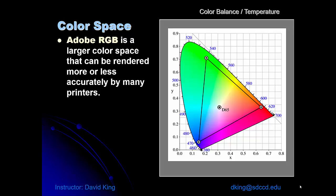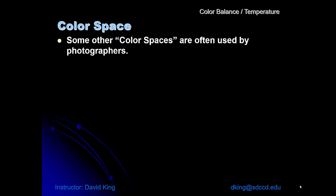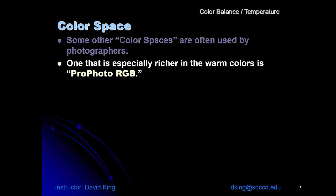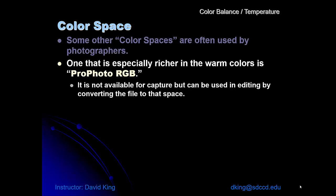There are other color spaces that are used by photographers. The one that is used most often because it's much richer in warm colors is ProPhoto RGB. Problem is, at the moment no camera can capture ProPhoto, but it is used a lot in editing. And we'll convert our files to that ProPhoto RGB space in the camera raw converters, which is another reason we want to be shooting in raw.